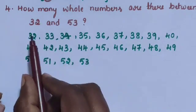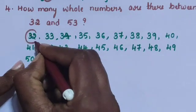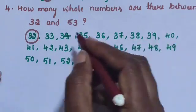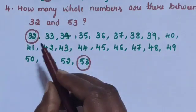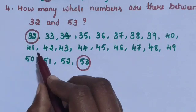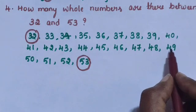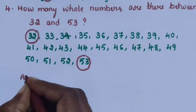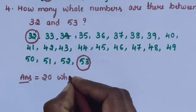So, how many whole numbers are there between 32 and 53? Counting them, the answer is 20 whole numbers.